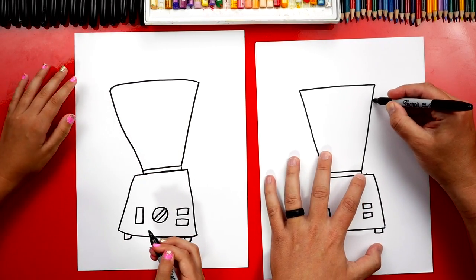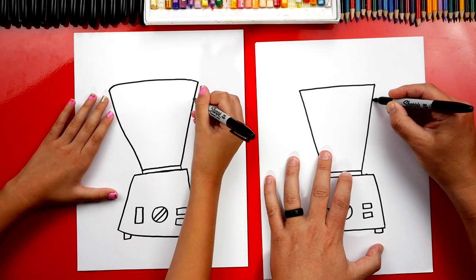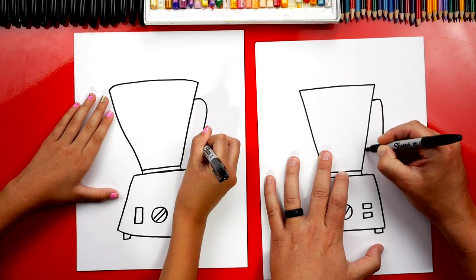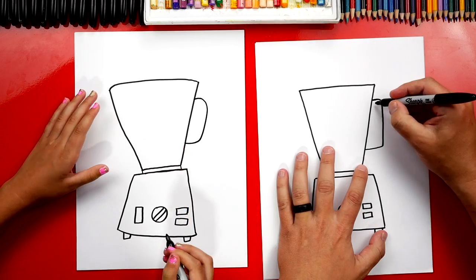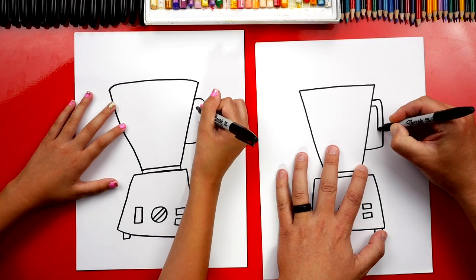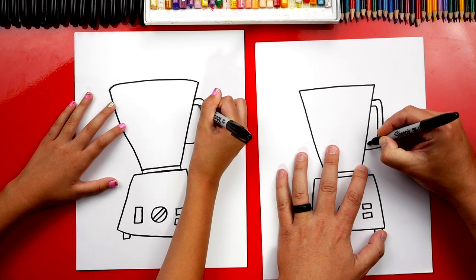And then we can also draw the handle. Let's draw a curved line that comes out. I'm gonna curve down and then back in. Let's make that look thicker. We can draw a smaller shape inside that matches. So you can actually put your hand. Yeah.